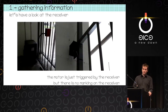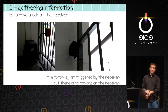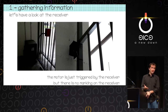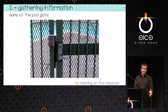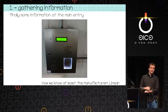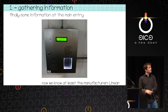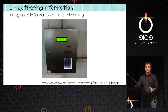Whenever there is a transmitter, there is a receiver — so you just run around the building and try to find the receivers to see if they have markings. On the garage gate, the receiver is on the top, just a black box. On the pool, it's also just an aluminium box with no markings. At the main entry, there's a fancy dial pad to contact the resident, and we see on the top it says it's from Linear — so at least we know the vendor, probably.